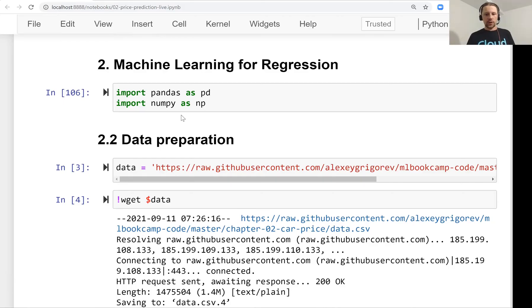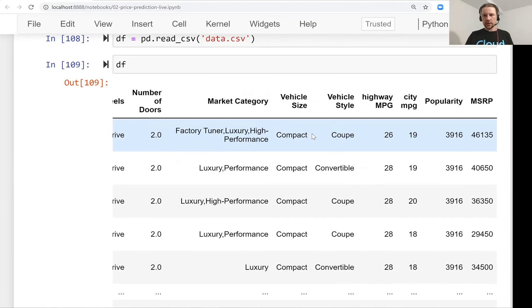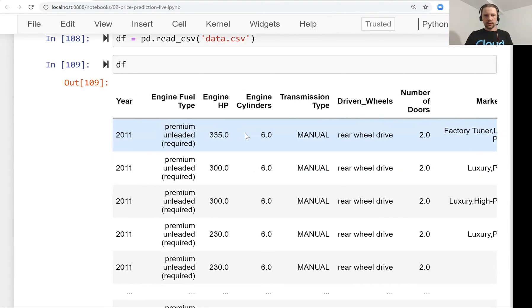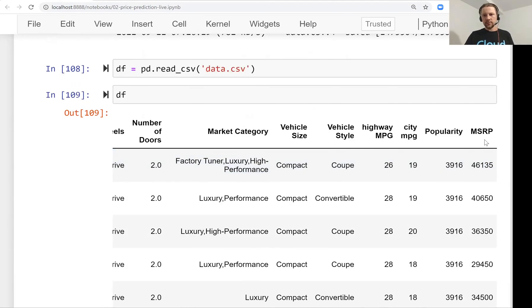We did a project for predicting the price of a car and we downloaded a dataset that had prices and different characteristics of a car. We had things like model, make, year, engine fuel type, transmission type, all these things, and we wanted to predict this price MSRP, which stands for manufacturer suggested retail price.